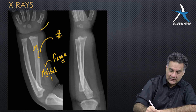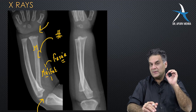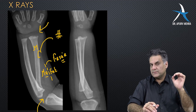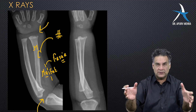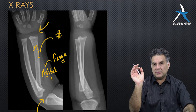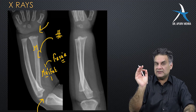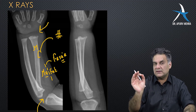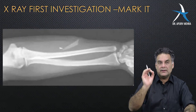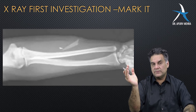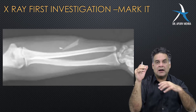The third thing X-ray can tell you about is joint space. Joint space is filled with cartilage, and cartilage is radiolucent. So when you have a decreased joint space, it means the cartilage is getting destroyed — we are dealing with arthritis.